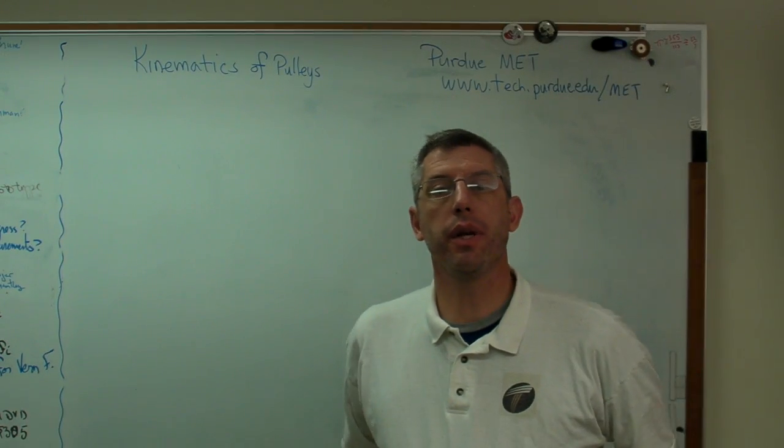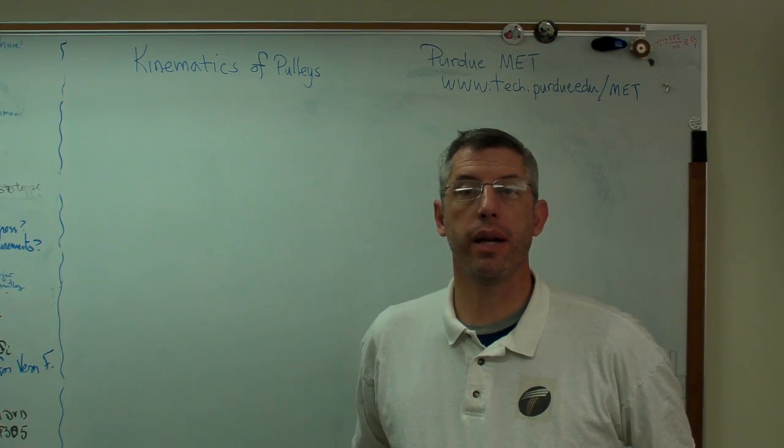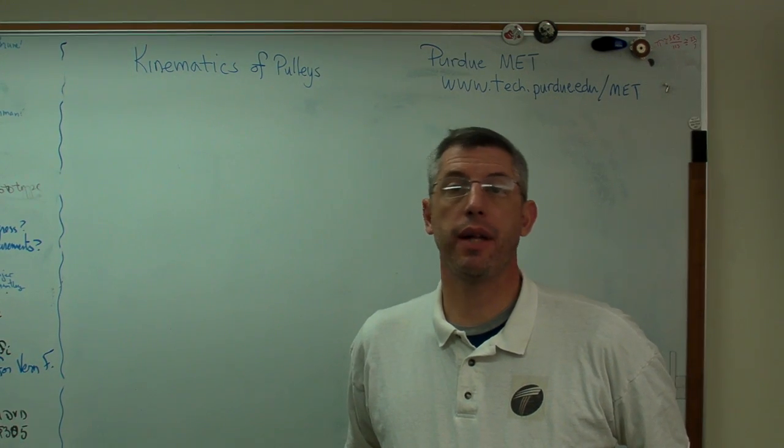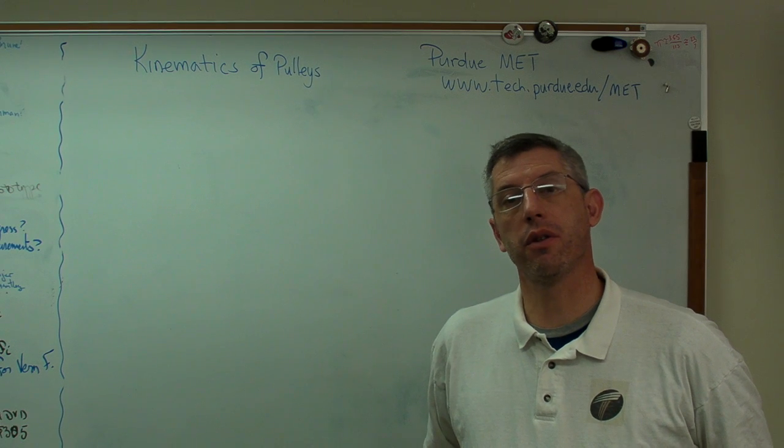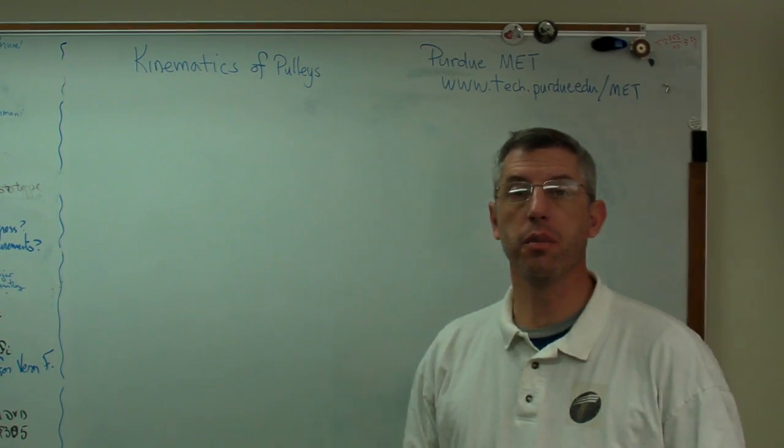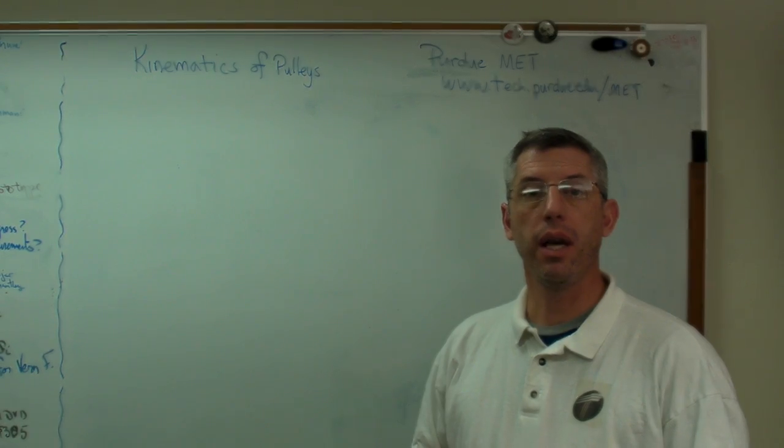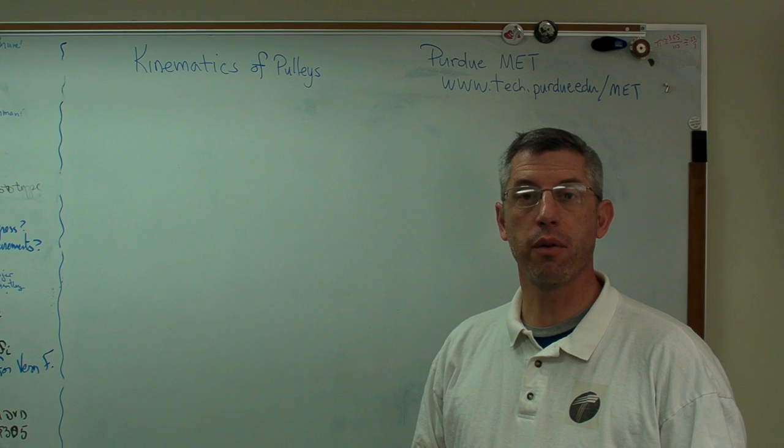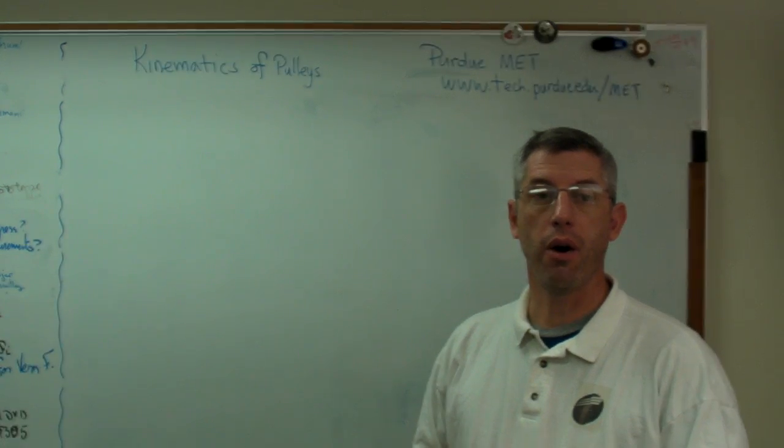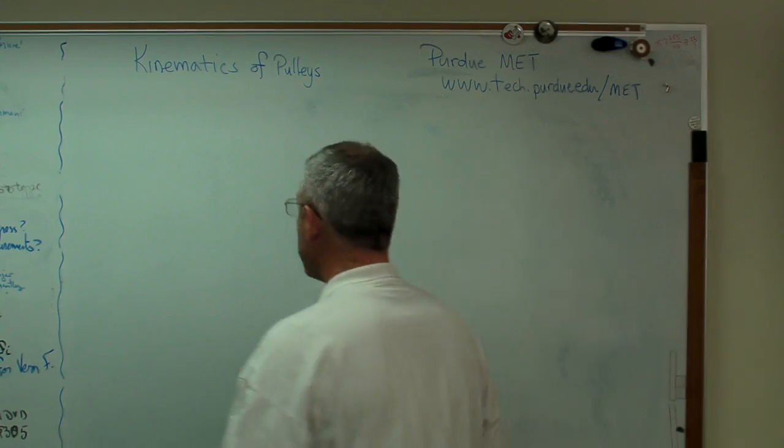Hello again. A student came into my office a couple days ago with a question about kinematics of pulleys. I thought that would make a pretty good YouTube video, so here we go. What I'd like to do is draw out a real simple system where we're lifting a weight with a rope and some pulleys and derive a relationship between how fast you're pulling the end of the rope and how fast the weight is going up.